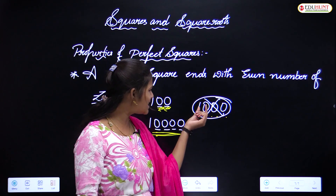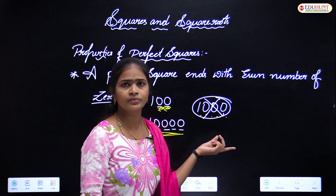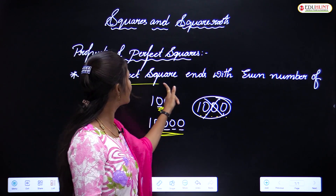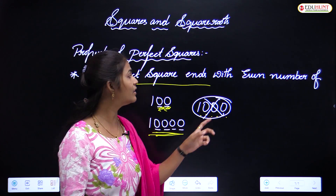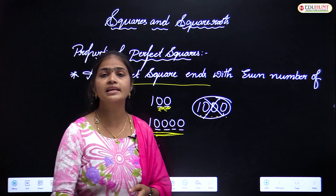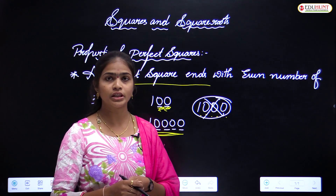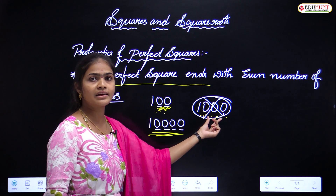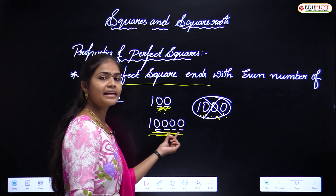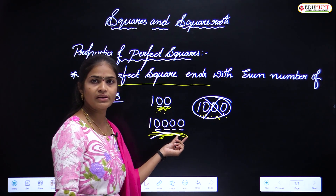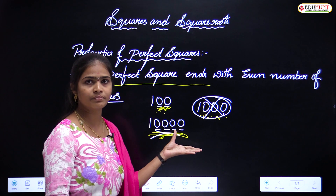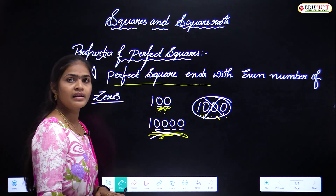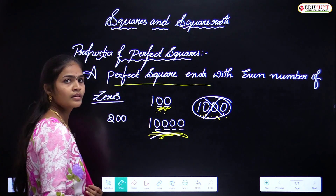What about 1,000? It has three zeros, and three is an odd number, so 1,000 is ending with an odd number of zeros. Therefore, we can easily say 1,000 is not a perfect square because this number ends with an odd number of zeros. A perfect square must end with an even number of zeros.